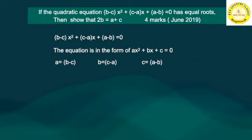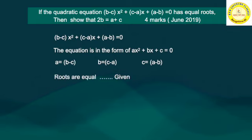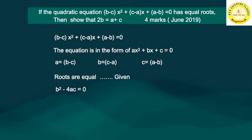As given in the problem, the roots of the quadratic equation are equal. When the roots of the quadratic equation are equal, the discriminant equals 0. The discriminant is b² minus 4ac, so b² minus 4ac equals 0.